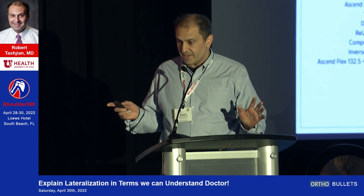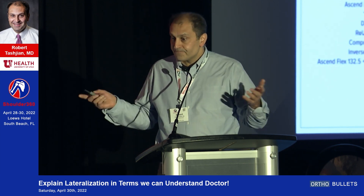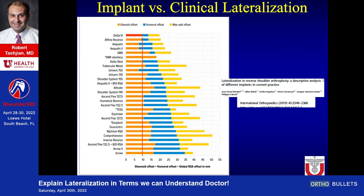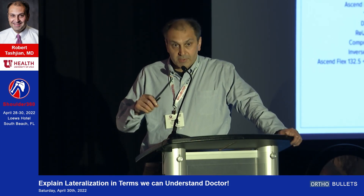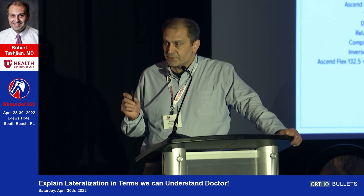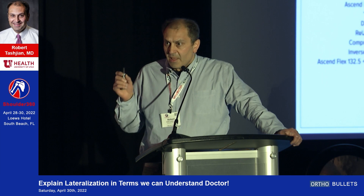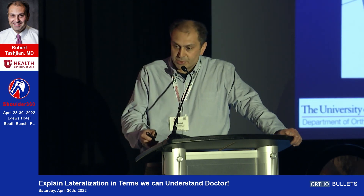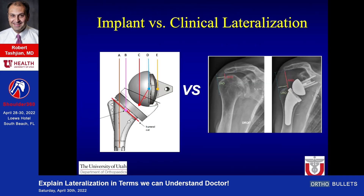The first thing to identify is what's the difference between implant and clinical lateralization. Implant lateralization is the amount of lateralization provided by the implant in reference to another position on the implant. Clinical lateralization is the amount of global lateralization provided when the implant is actually placed in a shoulder. Here are some schematics describing these: implant lateralization shows how much is provided by the implant alone, whereas clinical lateralization shows how much is provided when the implant is placed inside the shoulder.